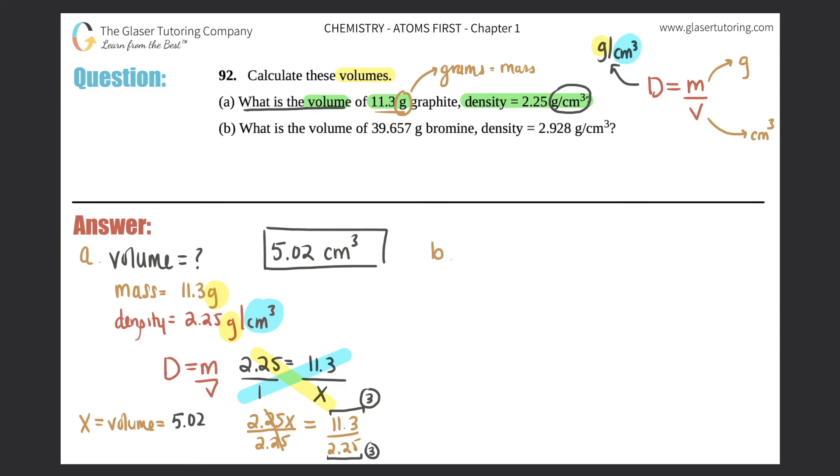So 5.02, now we just need the correct units. We look back to the density for the volume unit - the volume unit here was in centimeters cubed. They didn't say we had to convert to a specific unit, so that's it for this one.